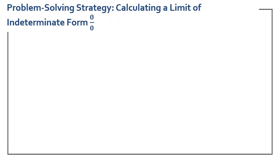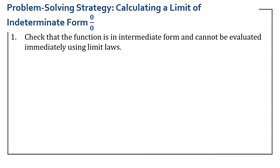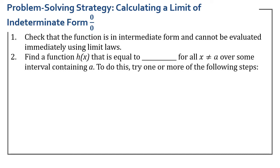Now that we have a bunch of limit laws, let's put together a problem-solving strategy for calculating a limit when f over g has the indeterminate form 0 over 0. First, we want to check that the function is in indeterminate form and cannot be evaluated immediately using limit laws. If we can just use limit laws like we did in the last few examples, then it should be easy and quick. But if we can't, then we're going to go through and follow these steps.